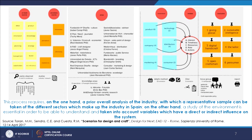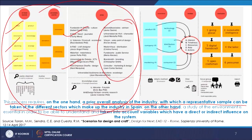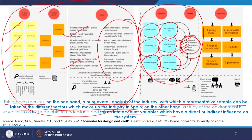This process requires, on one hand, a prior overall analysis of the industry — they are talking about the industry in Spain — from which a representative sample can be taken of the different sectors. On one hand there is this overall analysis of the industry with different sectors, different sets of information, sample sizes, and kinds of areas covered. On the other hand, it takes into account variables: product, technology, company, distribution, marketing, consumer — all the important aspects of the value chain and craft sector, plus variables with direct or indirect influence on the system.